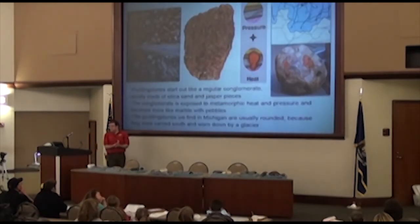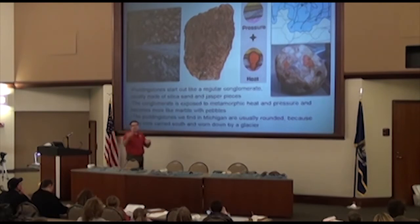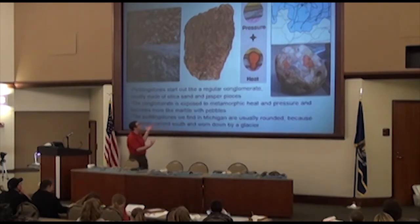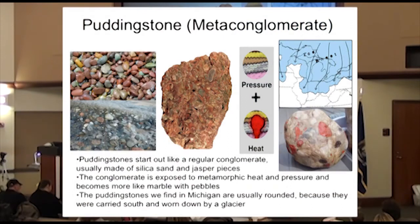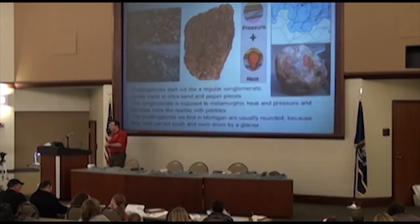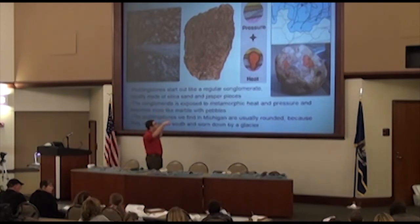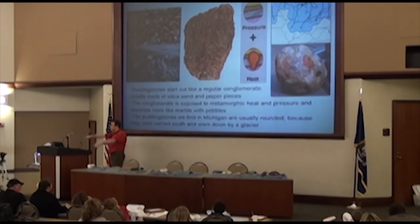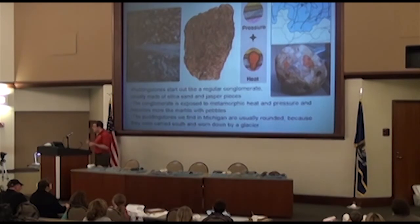We're going to talk briefly about another thing in your pamphlet, which is actually a metamorphic rock — metaconglomerate. This material is called pudding stone. Pudding stone is a type of conglomerate that had heat and pressure applied to it, making it more like a metamorphic rock. We find them in Michigan — they were formed mostly in Canada out of pieces of jasper, which makes for really pretty samples. The glaciers brought them down and deposited them here in Michigan, Ohio, and Indiana.